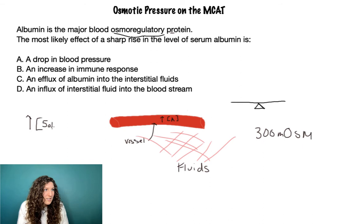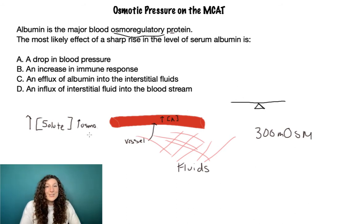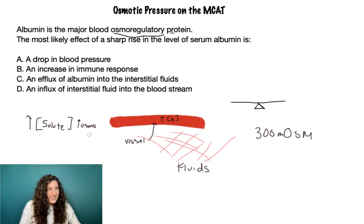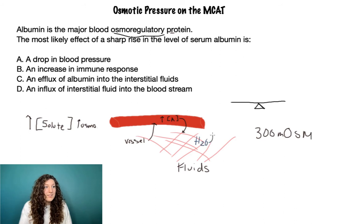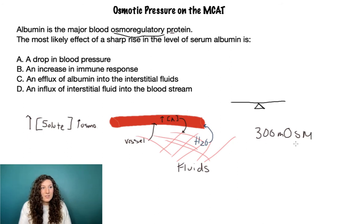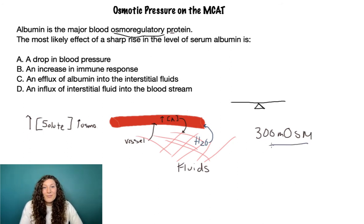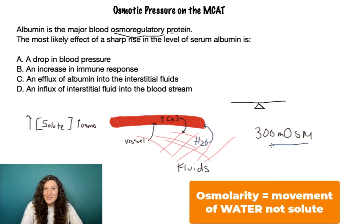When we've increased solute concentration, we've increased the osmolarity. There are two ways to fix this: either we move albumin from the blood vessel to the interstitium, or we move water from the interstitium into the blood vessel to reestablish that 300 milliosmoles balance. For the MCAT, when talking about osmolarity, we're talking about water movement — not solute movement.